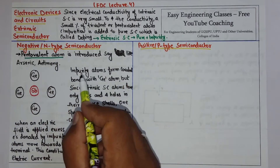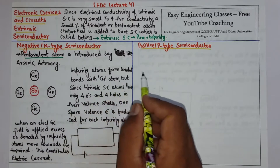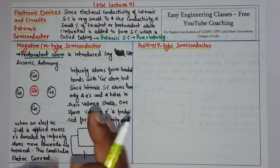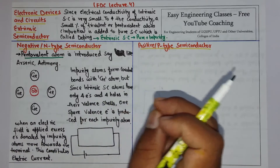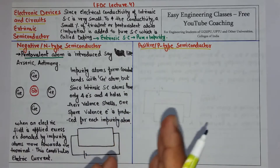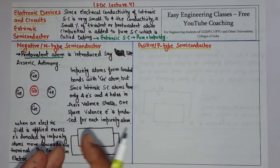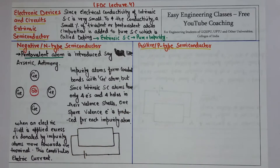The impurity added is a pentavalent atom. Since intrinsic semiconductor atoms have only four electrons in their valence shell, one spare valence electron is produced for each impurity atom. Because the impurity is pentavalent, you get 5 electrons in the valence shell, whereas the intrinsic semiconductor has a maximum of four.